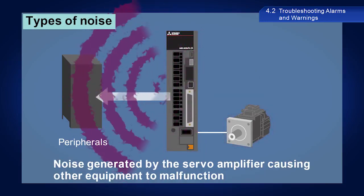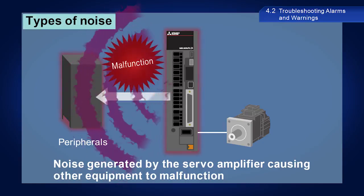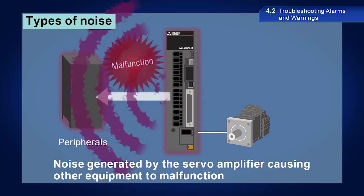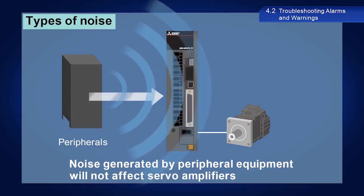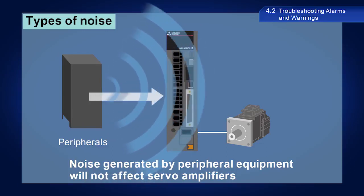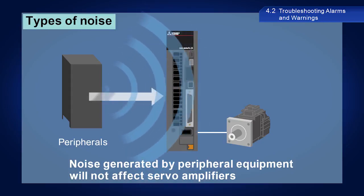Noise generated by the servo amplifier can also cause other equipment to operate incorrectly. Additionally, some noise generated by peripheral equipment will not affect servo amplifiers. When alarm 20.1 occurs, you must find and resolve the cause of the noise.